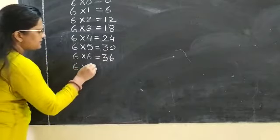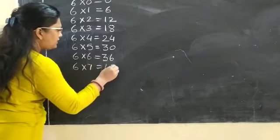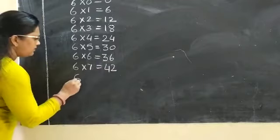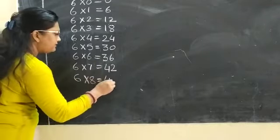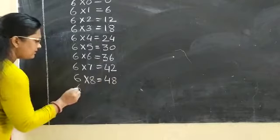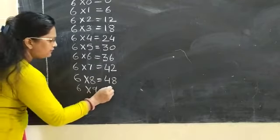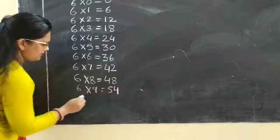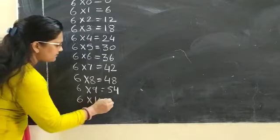6 times 7 is 42. 6 times 8 is 48. 6 times 9 is 54. And 6 times 10 is 60. Yes.